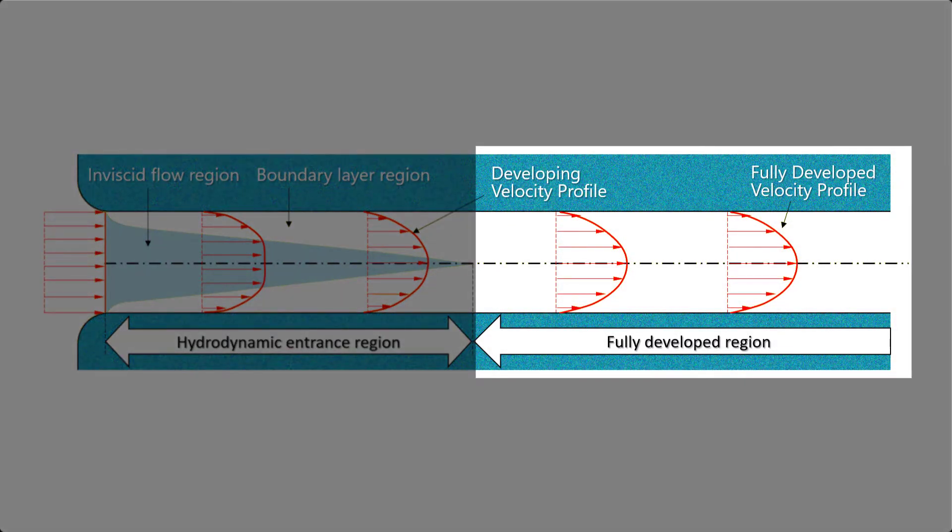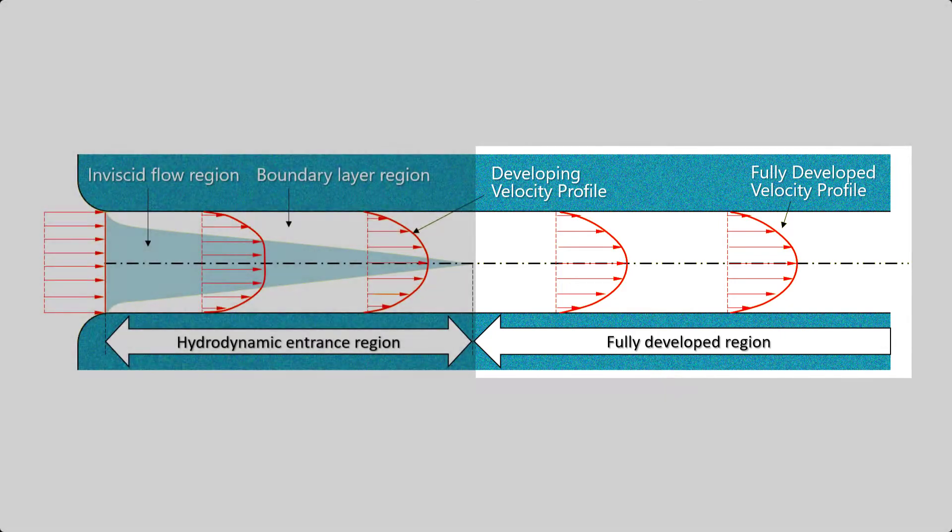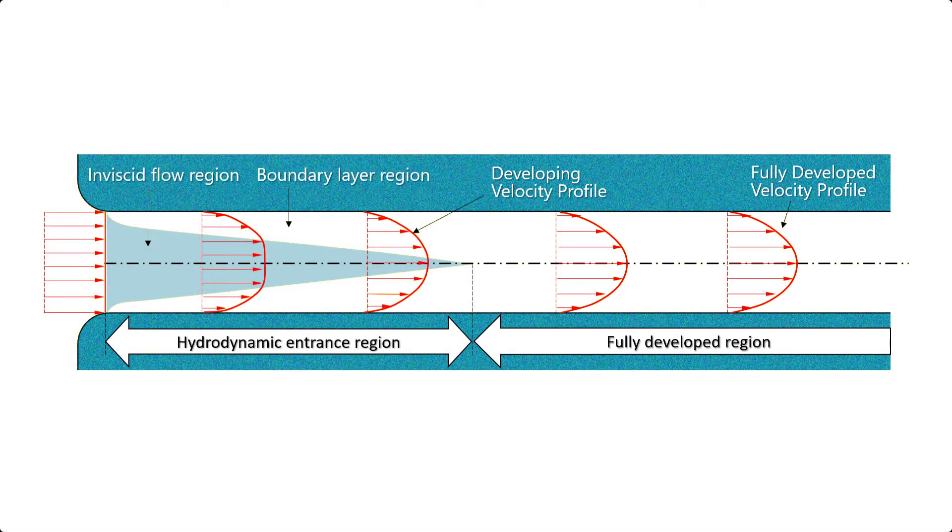Past the entrance length, the flow becomes fully developed, meaning that the rate of change of all the main quantities along the flow stream direction is zero, except for the pressure.